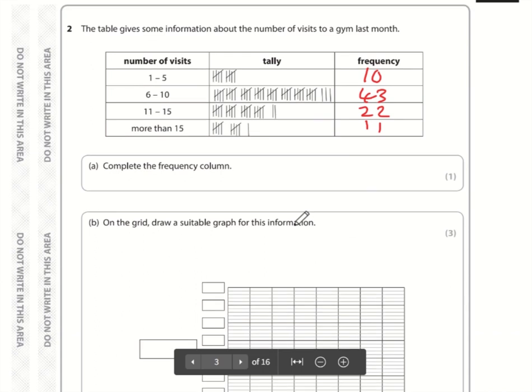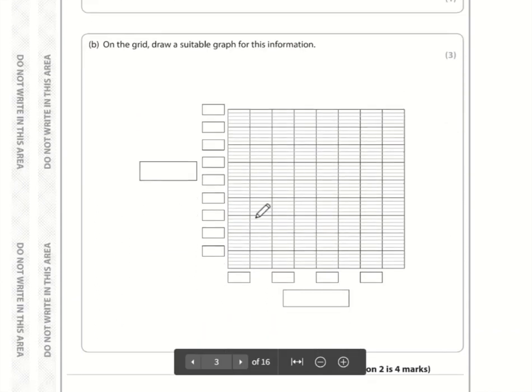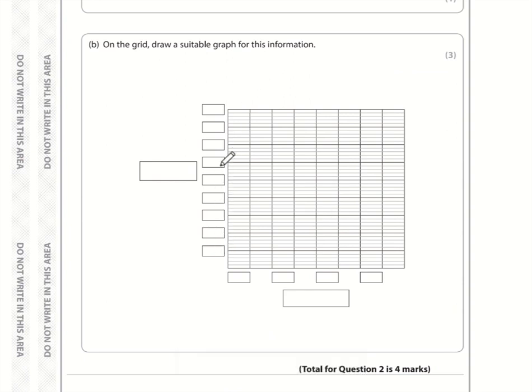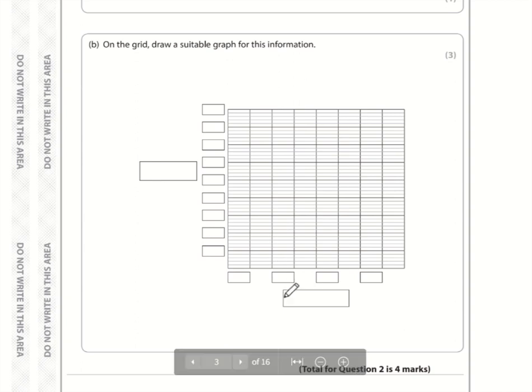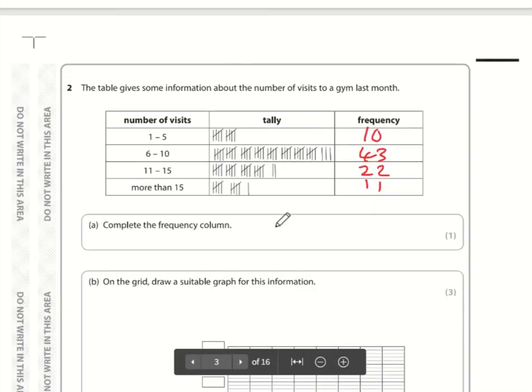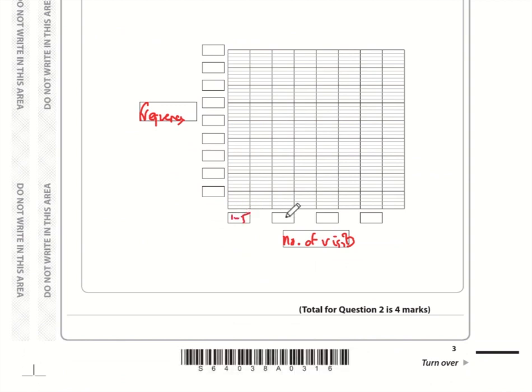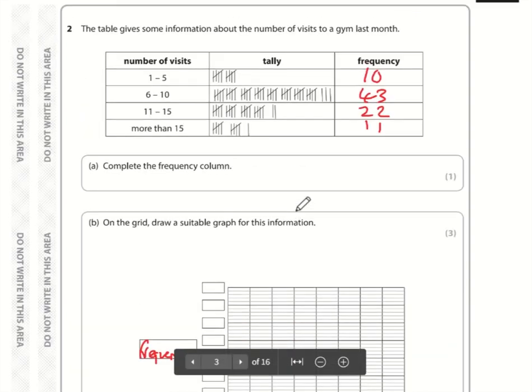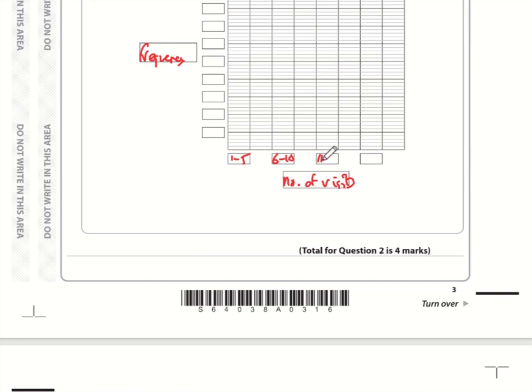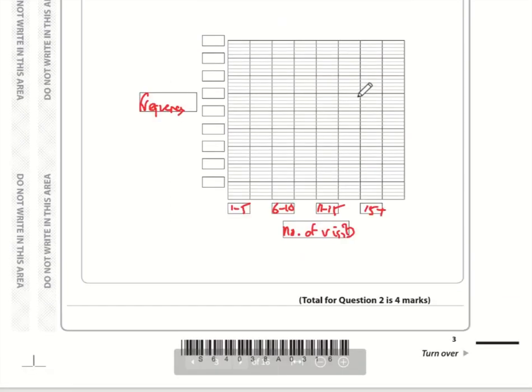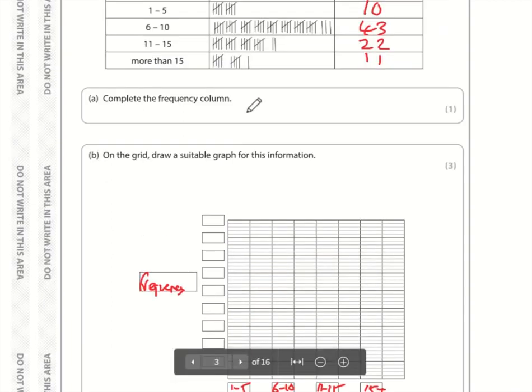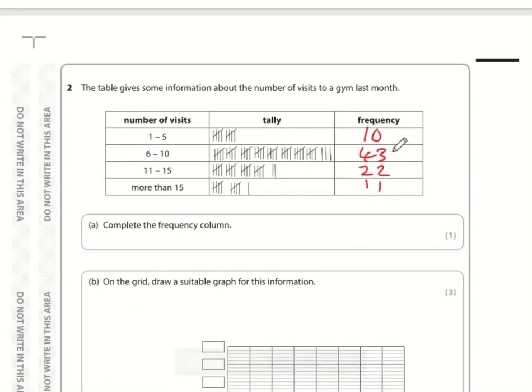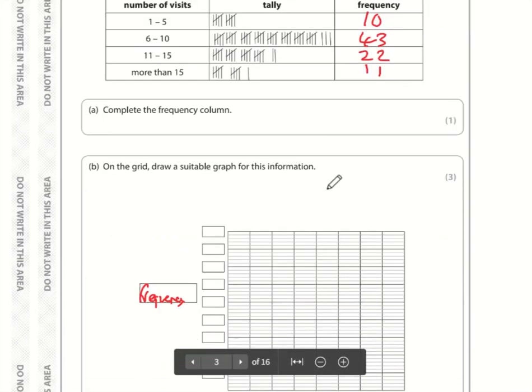Part B, we want to draw a suitable graph for the information. So the biggest frequency is 43, so we just need to think about the scale here. First of all, let's label the axes. We've got number of visits along the bottom and frequency here. So the number of visits was 1 to 5, 6 to 10, 11 to 15, and 15 plus.